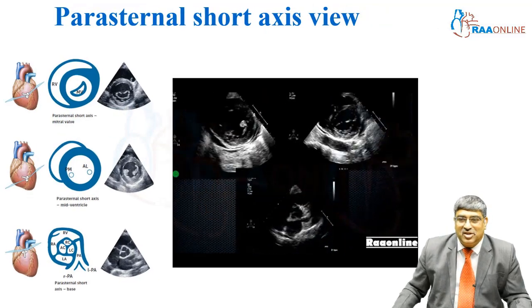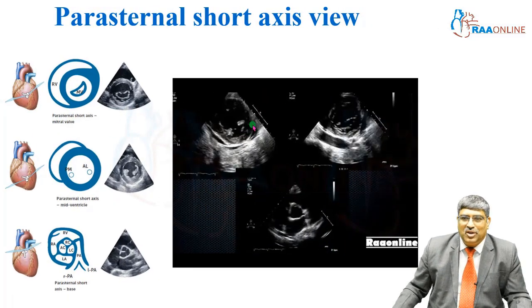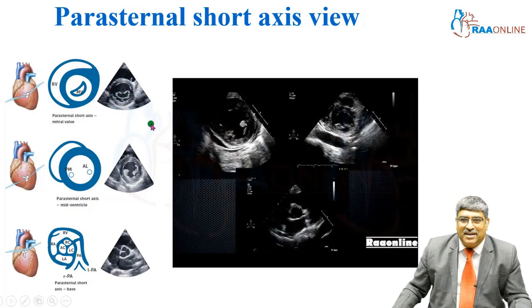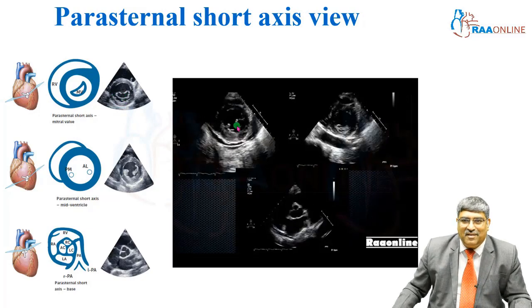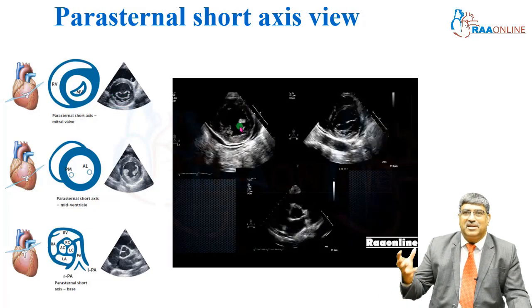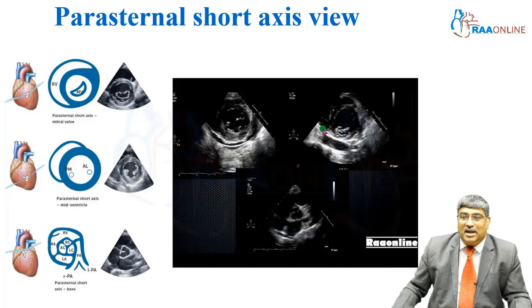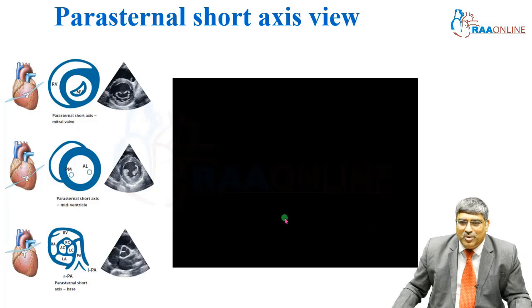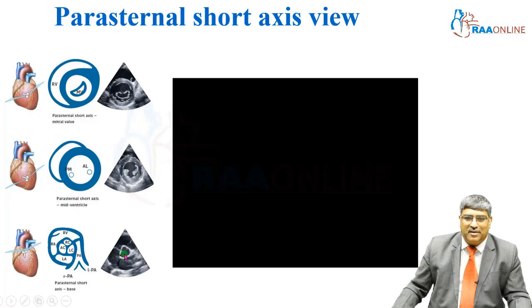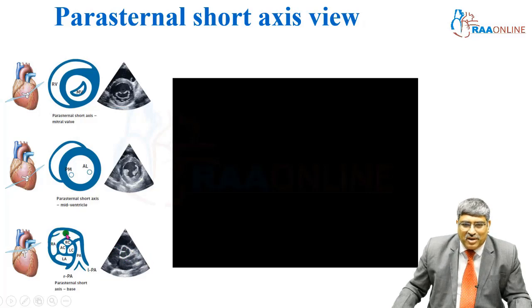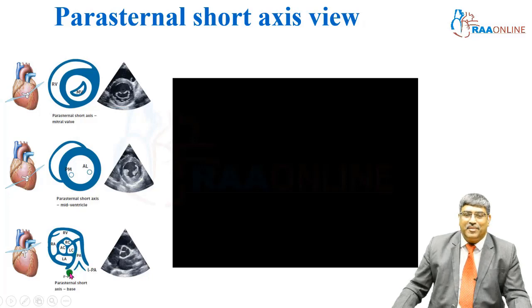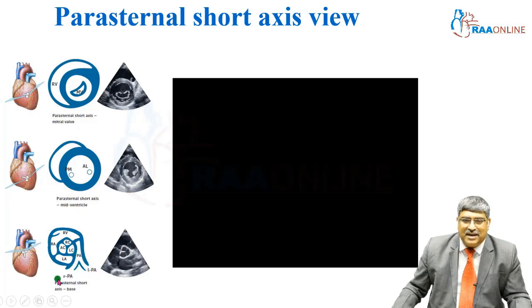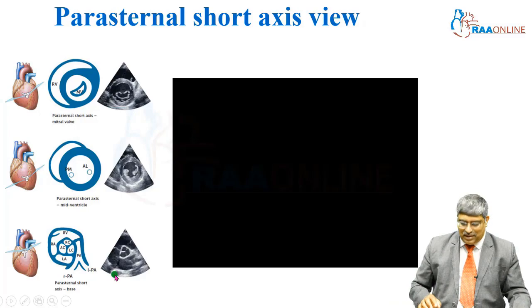Then comes the parasternal short axis view. Here you can see the LV at the level of the mitral valve, at the level of the papillary muscle, and assess contraction. This is very important in assessing the walls of the left ventricle. You can also look at the aortic valve — all three cusps — with the inflow and outflow of the right ventricle. You can measure the PA diameter as well as the right and left branch pulmonary arteries.